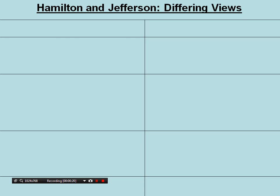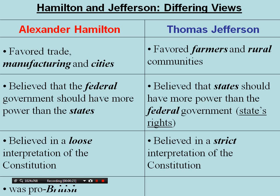What were the differences between the two parties? Alexander Hamilton of the Federalists favored trade, manufacturing, and cities. He believed that the federal government should have more power than the states, also believed in a loose interpretation of the Constitution, and was for the British.